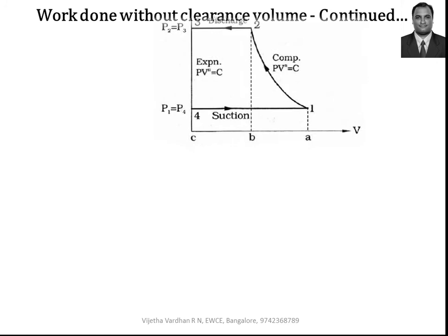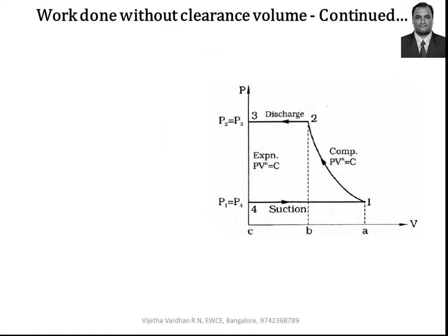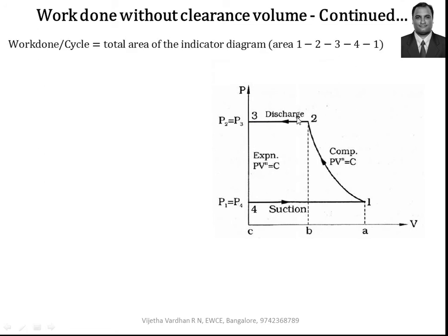Now the polytropic work done — we know that to calculate any work done in thermodynamics, the area under the curve is calculated, and that area gives us the work done expression. The total process is 4 to 1, 1 to 2, 2 to 3, and 3 to 4 in a cycle. The area under the indicator diagram 1, 2, 3, 4, back to 1, gives the work done for that particular cycle.